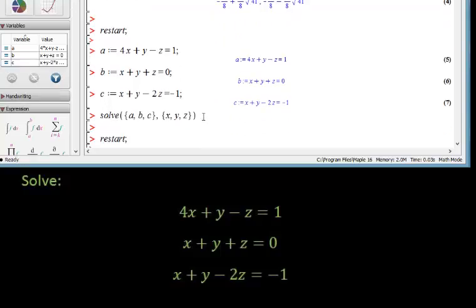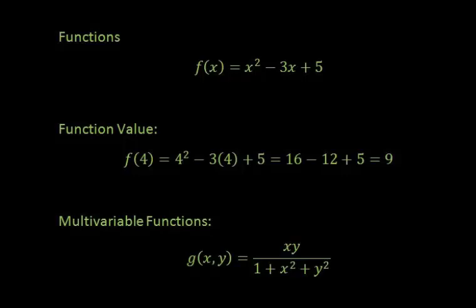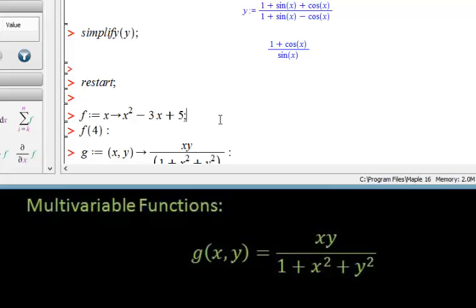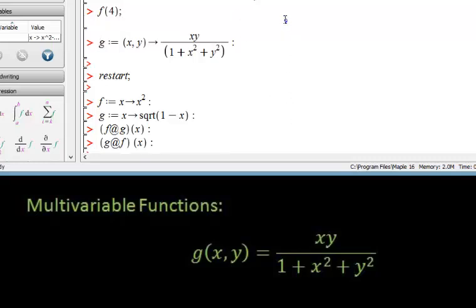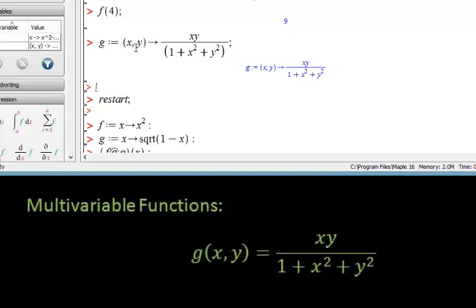Next, what we want to do is define functions. It's important to know how to define functions. Functions are defined simply by using those arrows. For example, if I want to define function g, I can say g := and then x, y and then an arrow, and then define the function. That function is defined, it will be written as such for me, and I can use it later on.